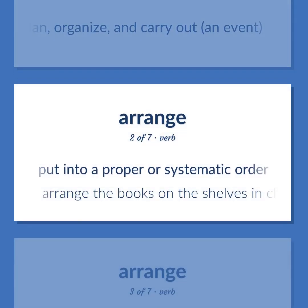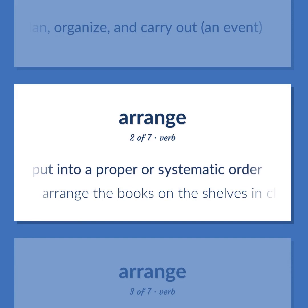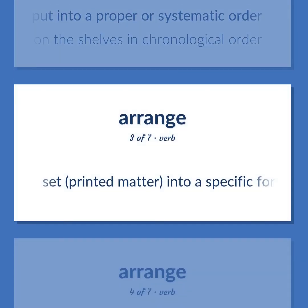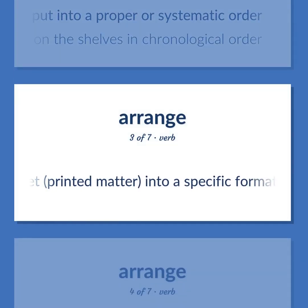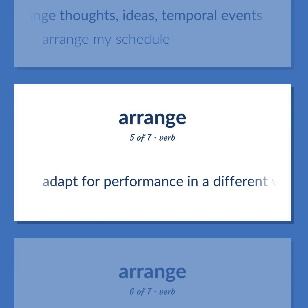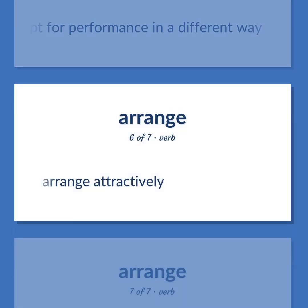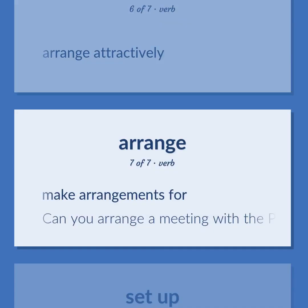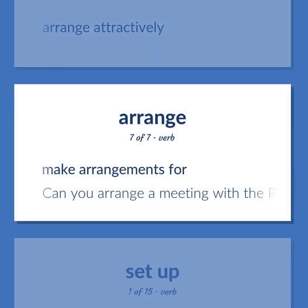Arrange: put into a proper or systematic order — example: arrange the books on the shelves in chronological order. Set printed matter into a specific format. Arrange thoughts, ideas, temporal events — example: arrange my schedule. Adapt for performance in a different way. Arrange attractively. Make arrangements for — example: Can you arrange a meeting with the president?